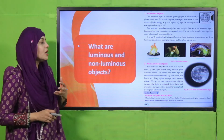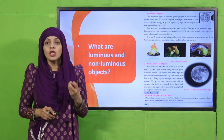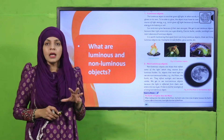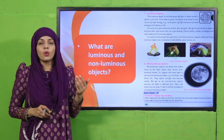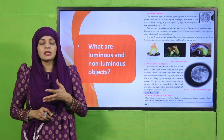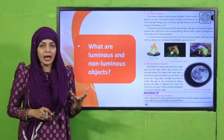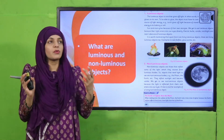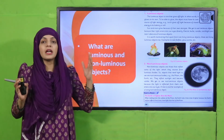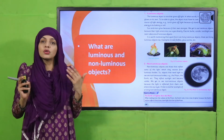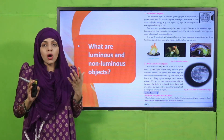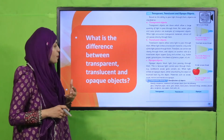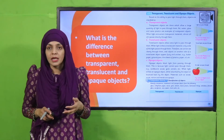Then we discussed luminous and non-luminous objects. Luminous objects have their own light, like the sun, bulb, and torch. Non-luminous objects are those which reflect the light of luminous objects. For example, the moon is a non-luminous object because it does not have its own light — it reflects the light of the sun. That is why we say the moon is non-luminous.